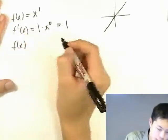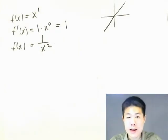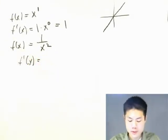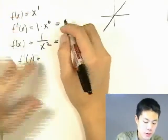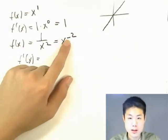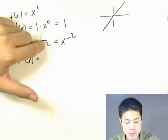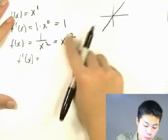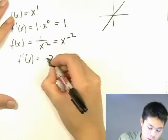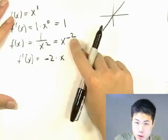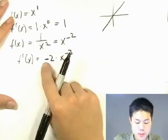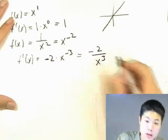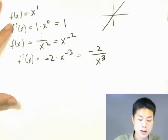Here's another example: f of x equals 1 over x squared. To find its derivative, rewrite it as x to the negative 2, since it's in the denominator. Taking the derivative: bring down the power negative 2 times x, and negative 2 minus 1 equals negative 3. So it's negative 2 times x to the negative 3, which we can rewrite as negative 2 over x to the third.